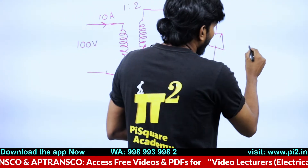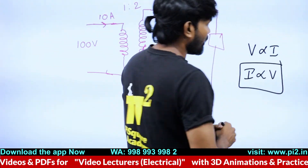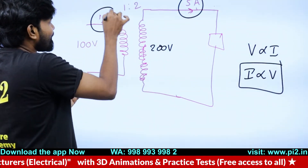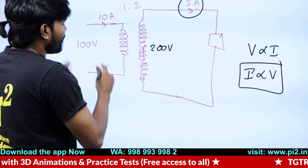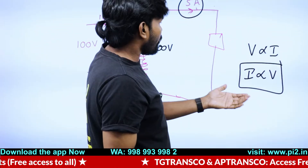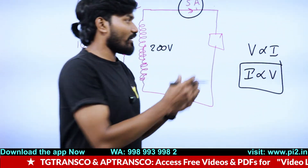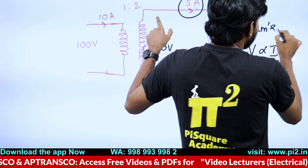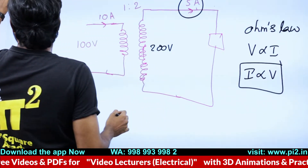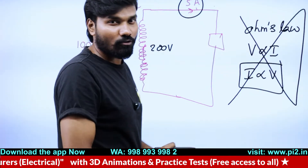According to Ohm's law, voltage is proportional to current, or current is proportional to voltage. Here current is 10 ampere and voltage is 100 volts. But when it comes to the secondary side, voltage is increased. So according to Ohm's law, if voltage is increased by two times, current also should increase by two times. But it has an inverse relation — so it appears Ohm's law is violated here.